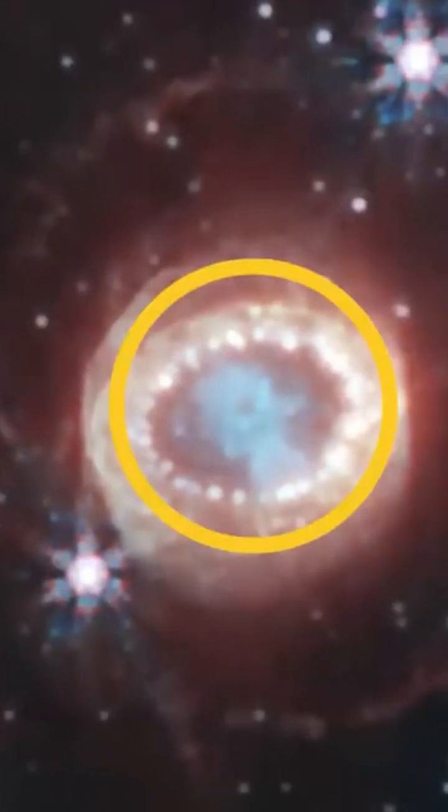The supernova remnant's center has a keyhole-shaped structure visible in blue. This center is packed with clumpy gas and dust ejected by the supernova's explosion.